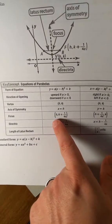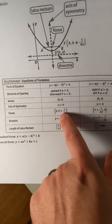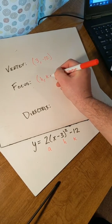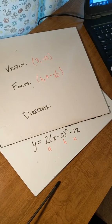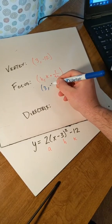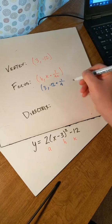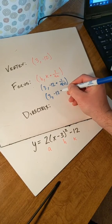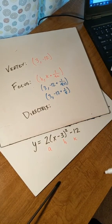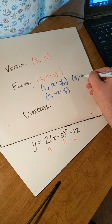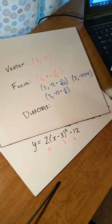Next, I'm going to write this one out. Our focus is at h, k plus 1 over 4a. So h is 3, k is negative 12 plus 1 over 4 times 2. That is 3, and then negative 12 plus 1 eighth. You can use a decimal here, so the answer for the focus would be 3 comma negative 11.875.